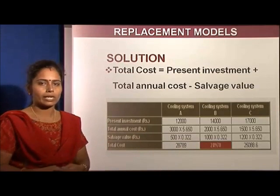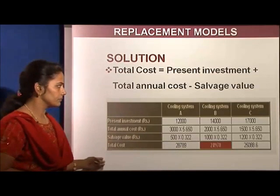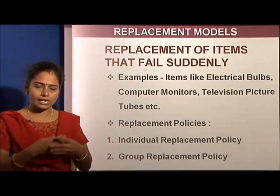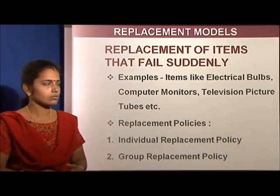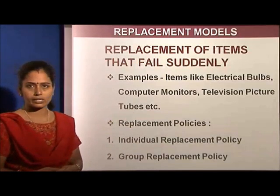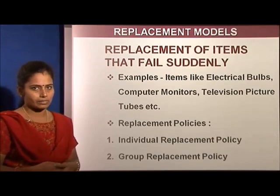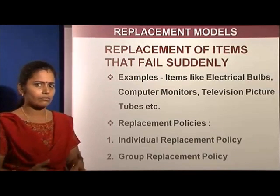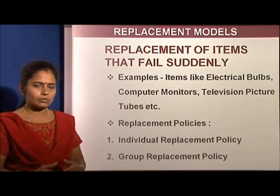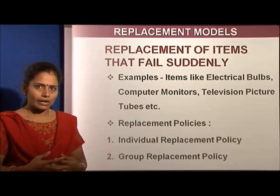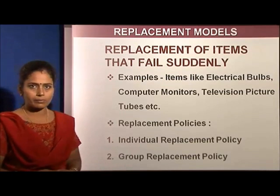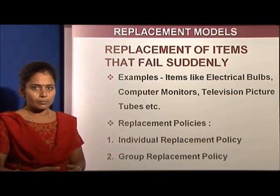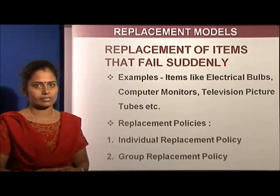Sometimes items will suddenly fail. For items like computer monitors, electric bulbs, and television picture tubes, there is sudden failure with no prior warning. In such cases, a decision must be made whether to use an individual replacement policy or a group replacement policy, depending upon the situation that arises.